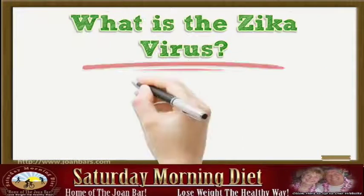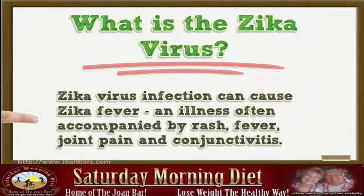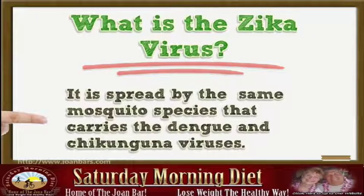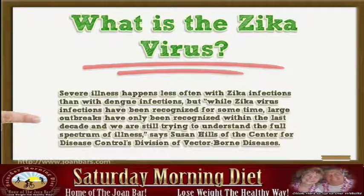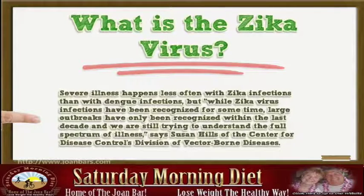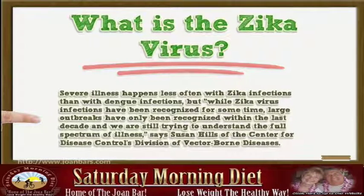What is the Zika virus? Zika virus infection can cause Zika fever, an illness often accompanied by rash, fever, joint pain, and conjunctivitis. It is spread by the same mosquito species that carries the dengue and chikungunya viruses. Severe illness happens less often with Zika infections than with dengue infections, but while Zika virus infections have been recognized for some time, large outbreaks have only been recognized within the last decade and we are still trying to understand the full spectrum of illness, says Susan Hills of the Center for Disease Control's Division of Vector-Borne Diseases.